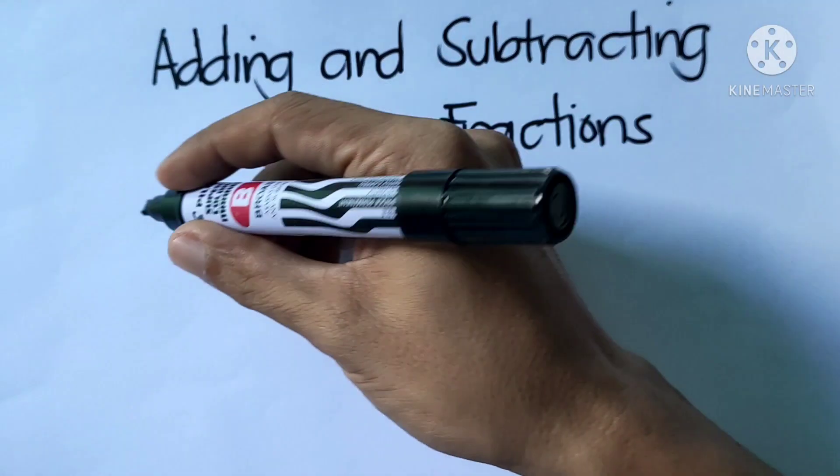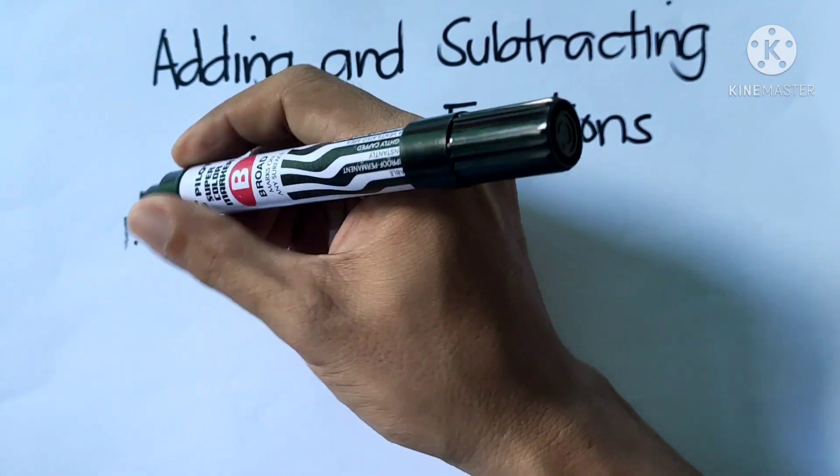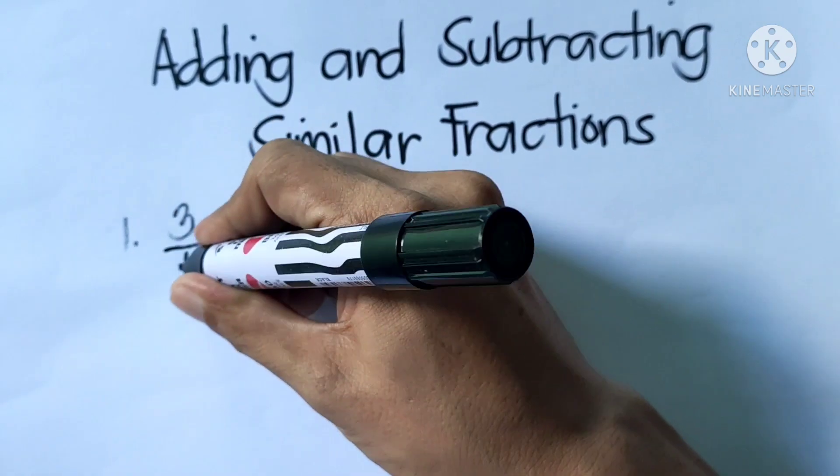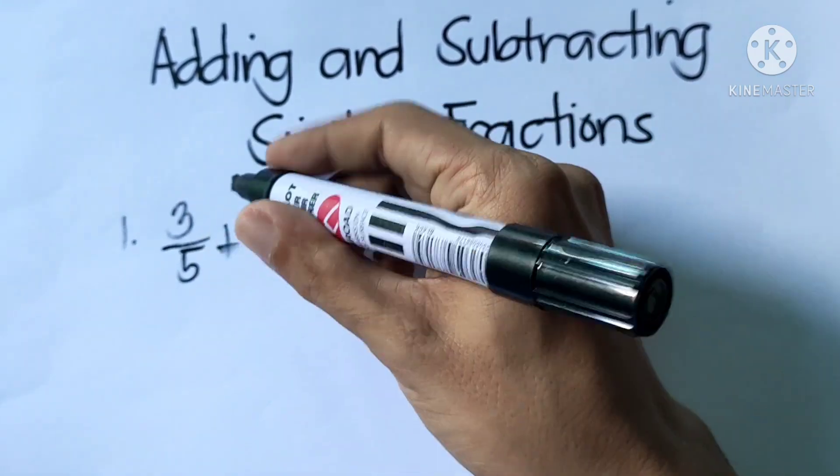Okay, so example number 1: 3 fifths plus 1 fifth.